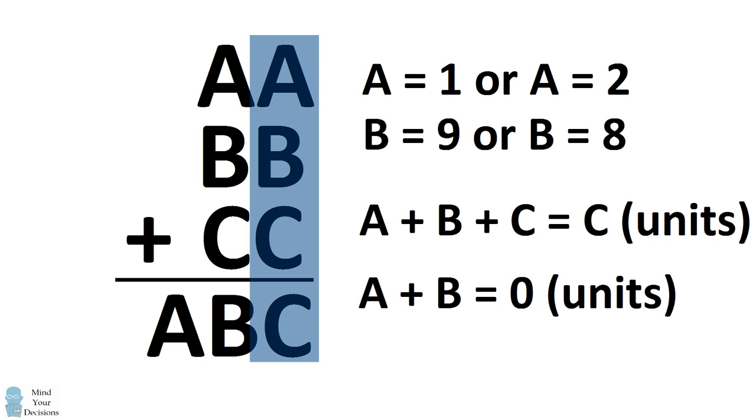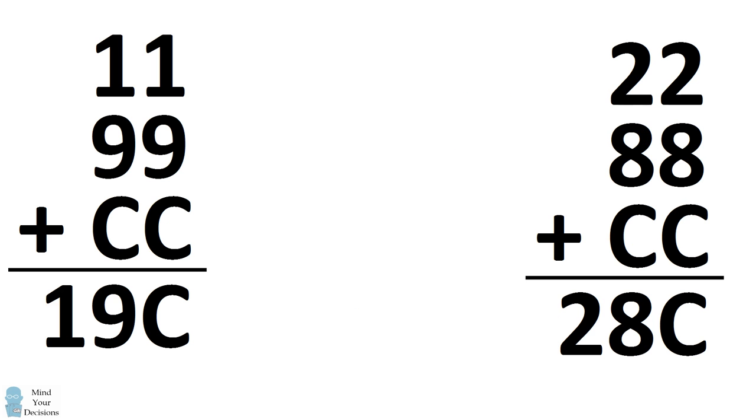So we basically have two different cases to consider. We either have 11 plus 99, or 22 plus 88. So let's consider each case.